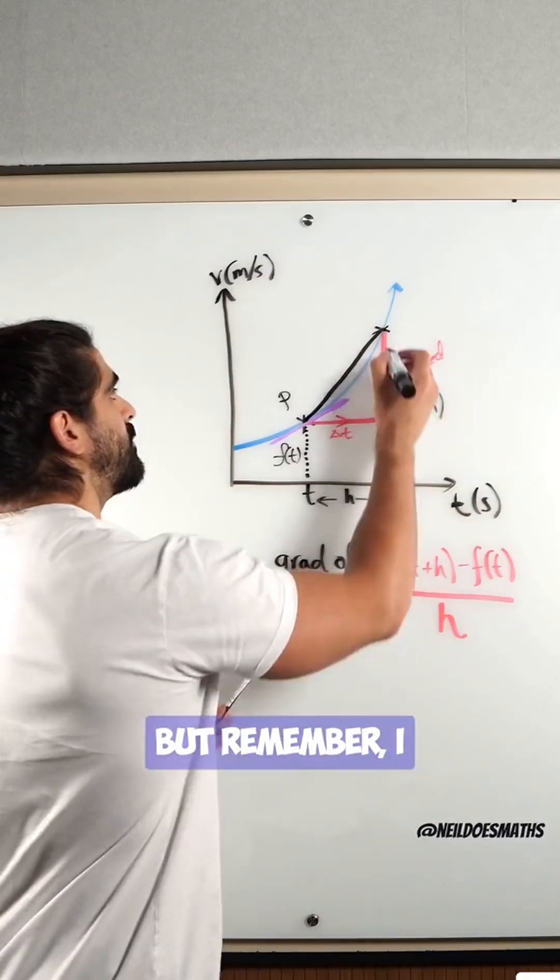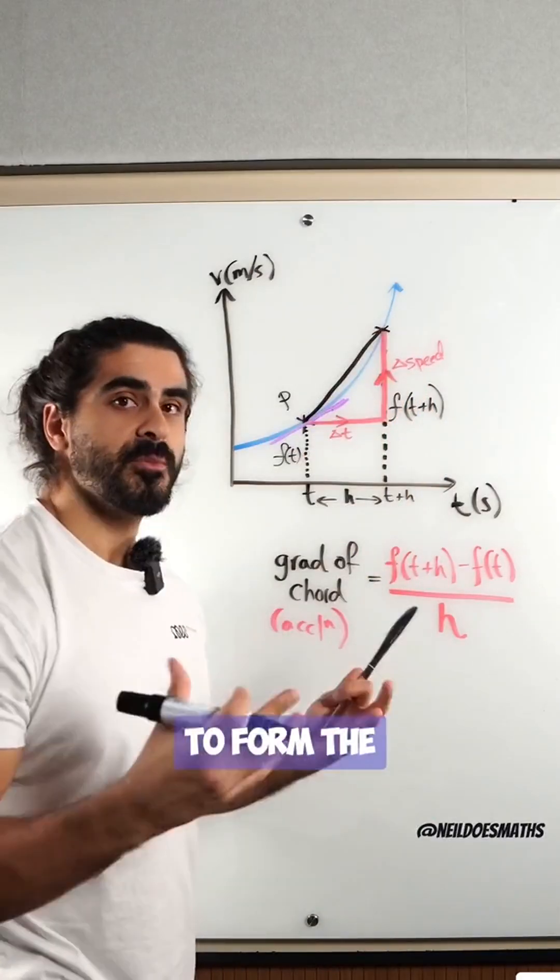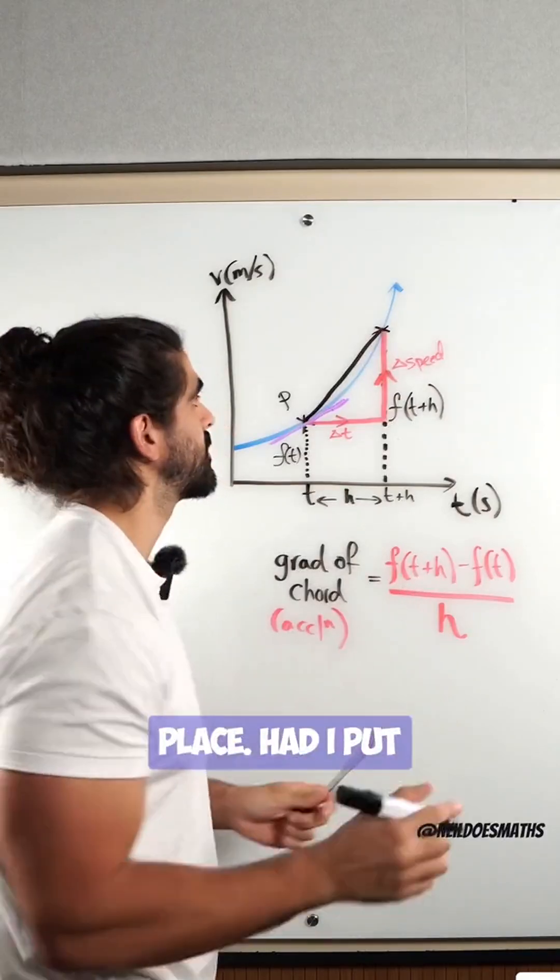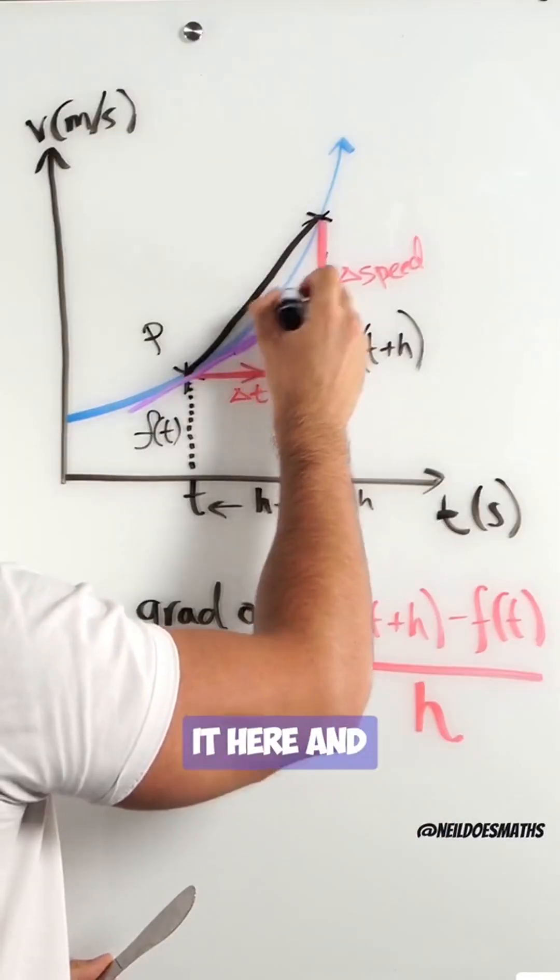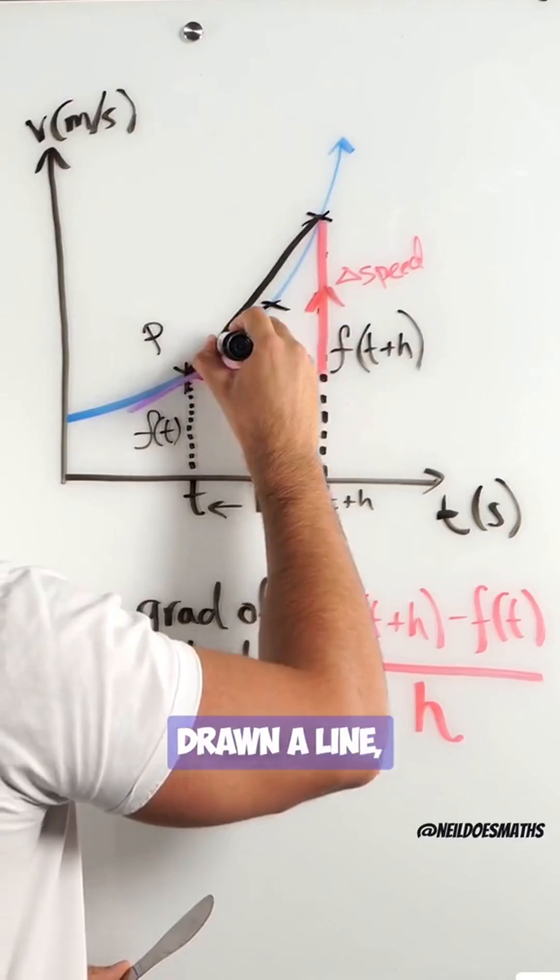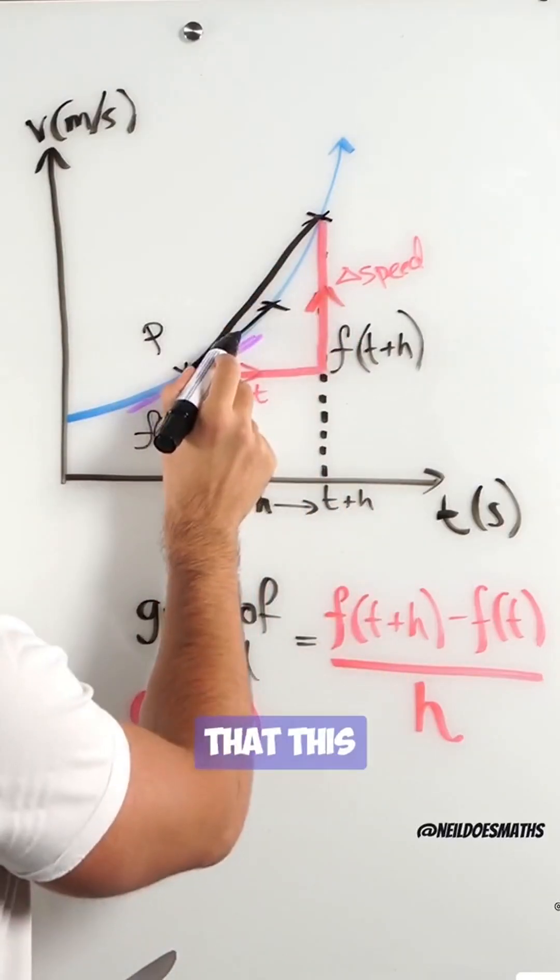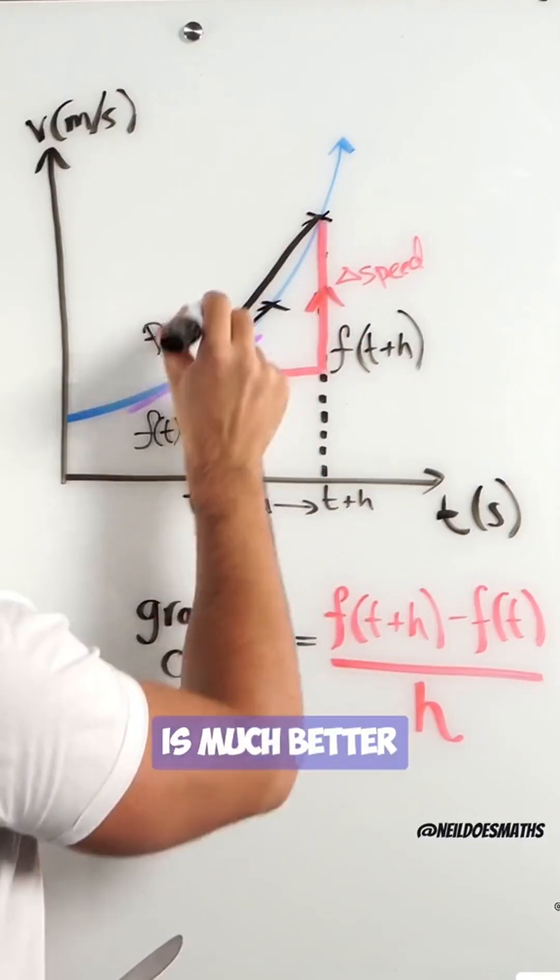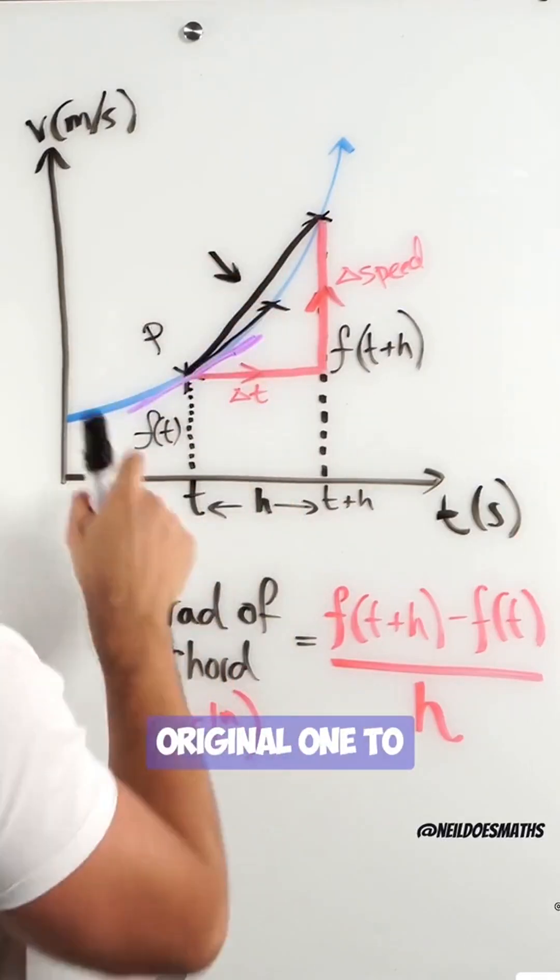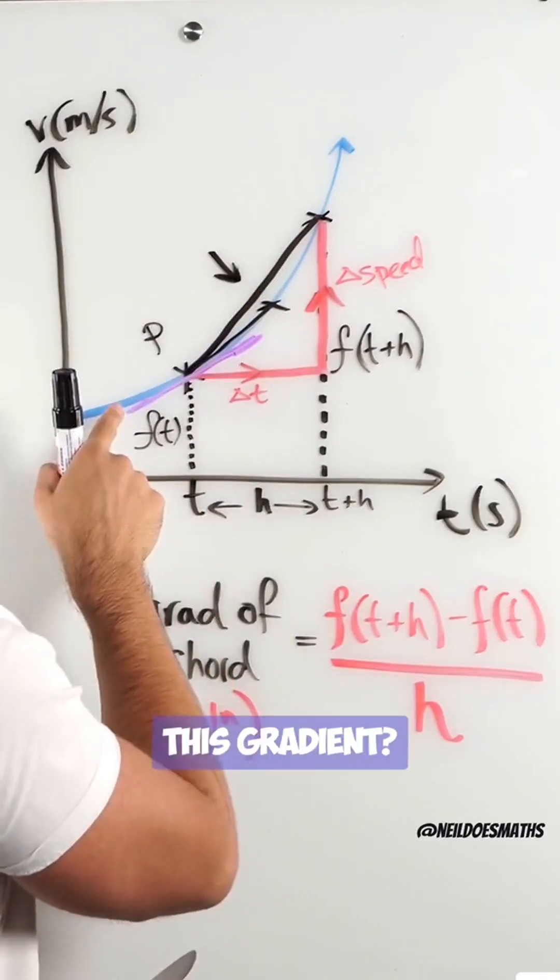But remember, I put that point to form the chord in a completely random place. Had I put it here and drawn a line, can you see that this gradient is much better than this original one to approximating this gradient?